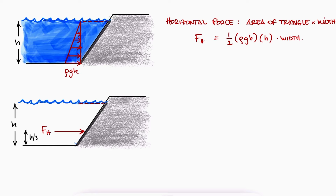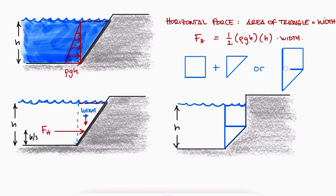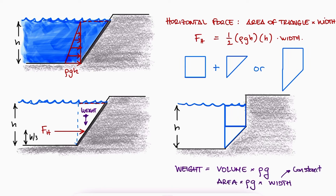On an inclined surface, the weight of the liquid above it, which is a vertical load, also affects the surface. In some cases this weight will only be a triangle, or the combination of a rectangle plus a triangle, or just a trapezoid. The weight of the liquid would be the volume times the specific weight, which for a 2D representation is the area times the specific weight times the width. The location of the point load from the rectangular portion is at the center, and the location from the triangular weight is one third of the way from the side of the triangle.